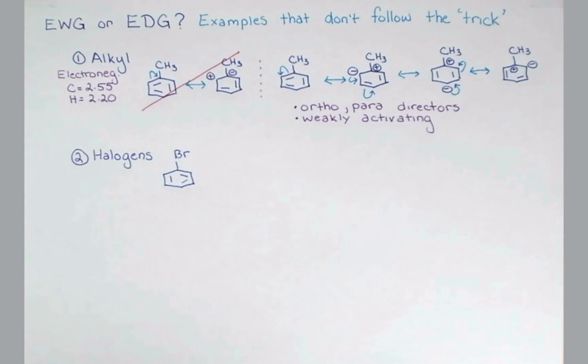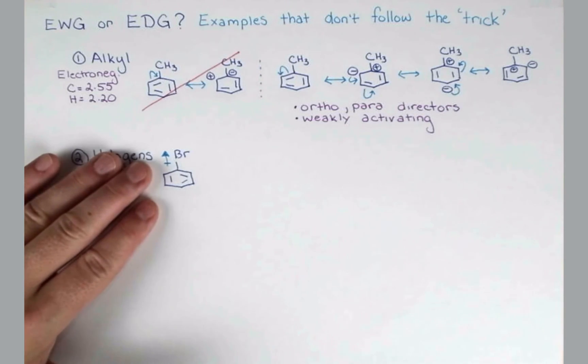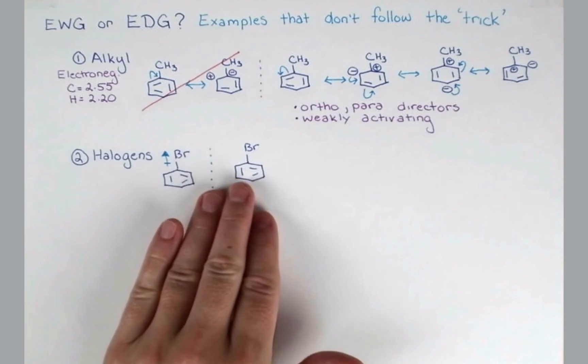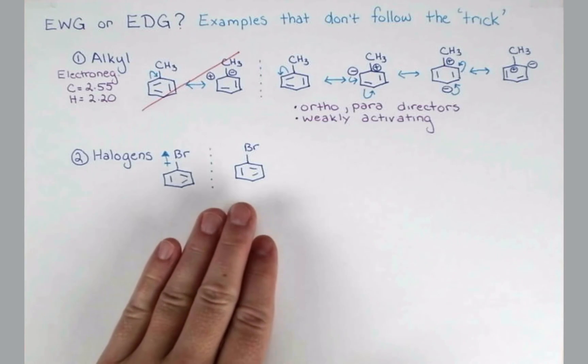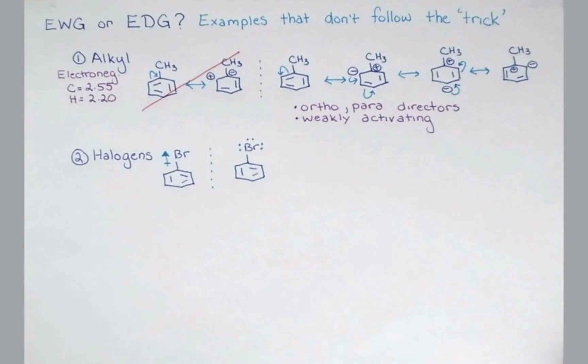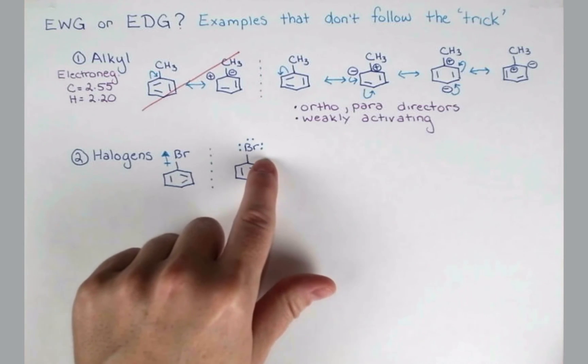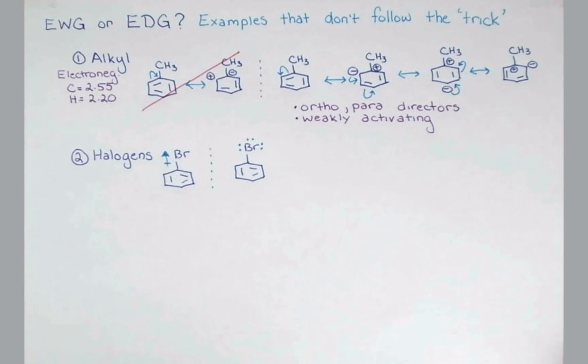Well, we have to think about this more chemically. The halogens are actually quite a unique example. Inductively, they draw electron density out of the ring. However, each halogen has three lone pairs on it. Now, like we saw in the last video, these lone pairs can actually be pushed into the ring by resonance.